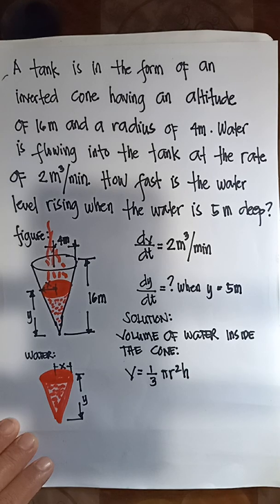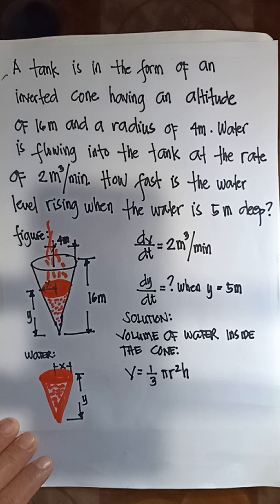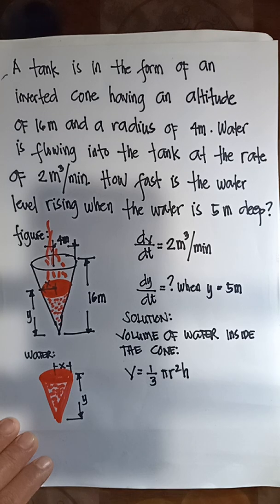Example here. A tank is in the form of an inverted cone having an altitude of 16 meters and a radius of 4 meters. Water is flowing into the tank at the rate of 2 cubic meters per minute. How fast is the water level rising when the water is 5 meters deep?